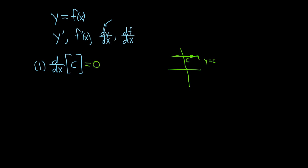So the derivative of a constant is zero. Let's do a simple example. Say we have f of x equals two, and we're asked to find the derivative. We write f prime of x, and the answer is zero. The derivative of a number is always zero.